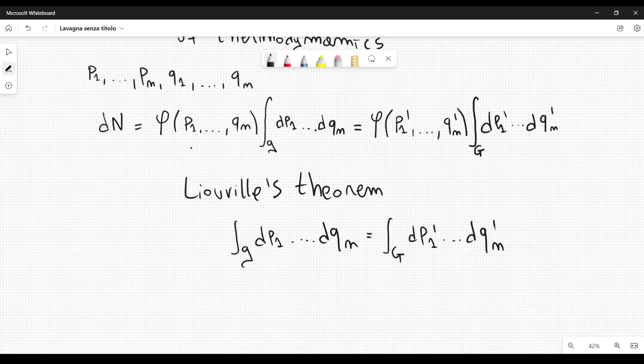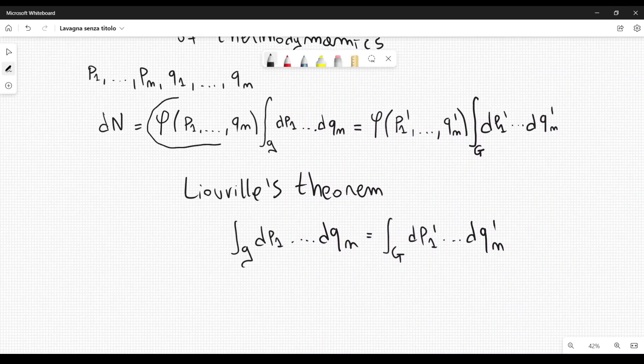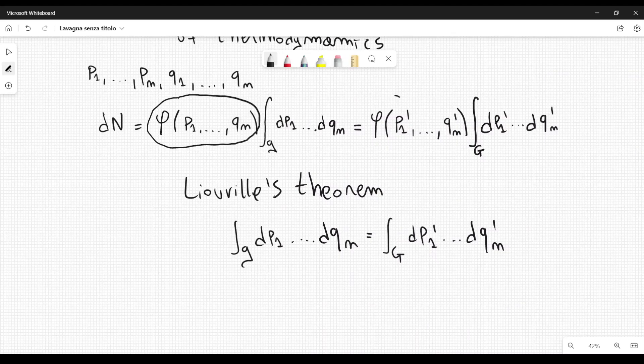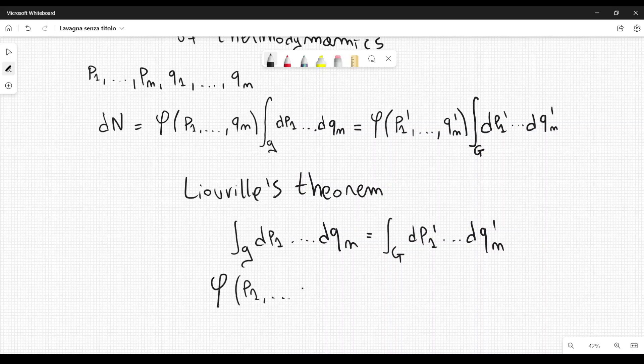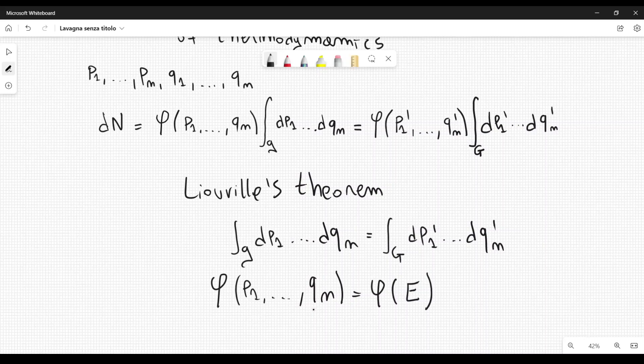And from this Einstein argued that this function, which depends on the variable P1 dot dot dot Qn, is equal to this function which depends on the variable P1 prime to Qn prime. So this function phi does not depend on the variables, but rather it is a function of only the energy of the system. So this is a constant with respect to the variables, but it will depend on the energy of the system.